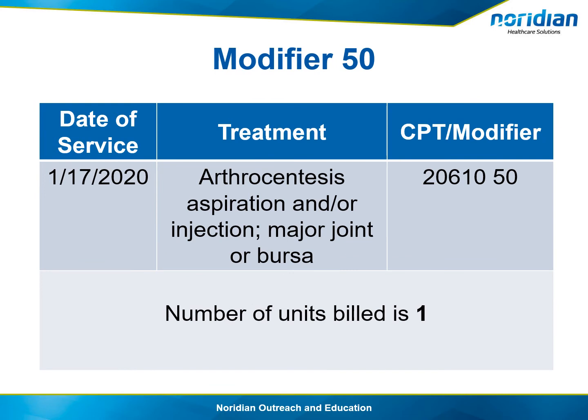What if it was on the right shoulder and the left shoulder? That can be billed with modifier 50 on one line with the number of units as 1 — but only if the injections were to the same body organ or area. Modifier 50 pays automatically at 150%, so the allowance would be the same as if billed without modifier 50 with the number of services as 1.